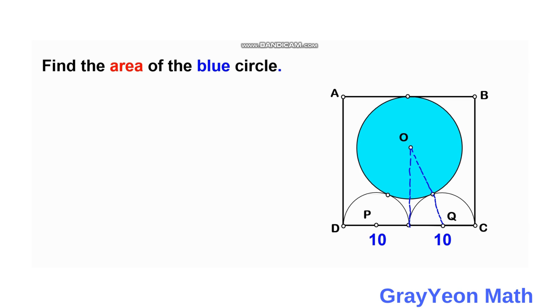So this becomes, let's call this the radius R, so the radius of this blue circle. And this is 5 since the diameter is 10. And this distance